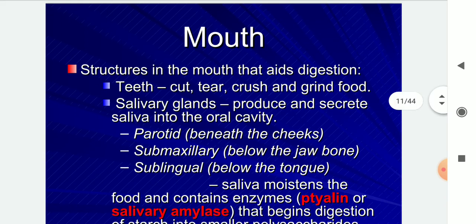Structures in the mouth that aid digestion: teeth cut, tear, crush, and grind food. Salivary glands — major function is to produce and secrete saliva into the oral cavity. The three salivary glands are parotid, submaxillary, and sublingual.